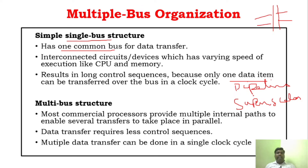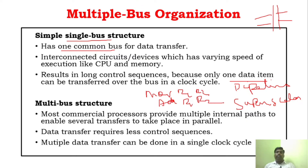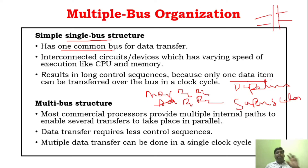Pipelining means: for example, you have two instructions — MOVE R1, R2 and ADD R1, R1, R2. The first instruction will be fetched and executed, and before its execution completes fully, the next instruction starts executing. That is called pipelining — executing continuously where before the previous instruction is completed, the next instruction starts executing.